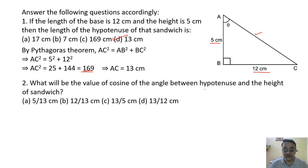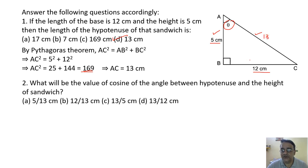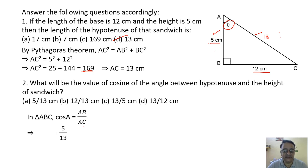Question 2: Find the cosine of the angle between the hypotenuse and the height. cos θ = adjacent/hypotenuse = AB/AC = 5/13. The correct option is option B.